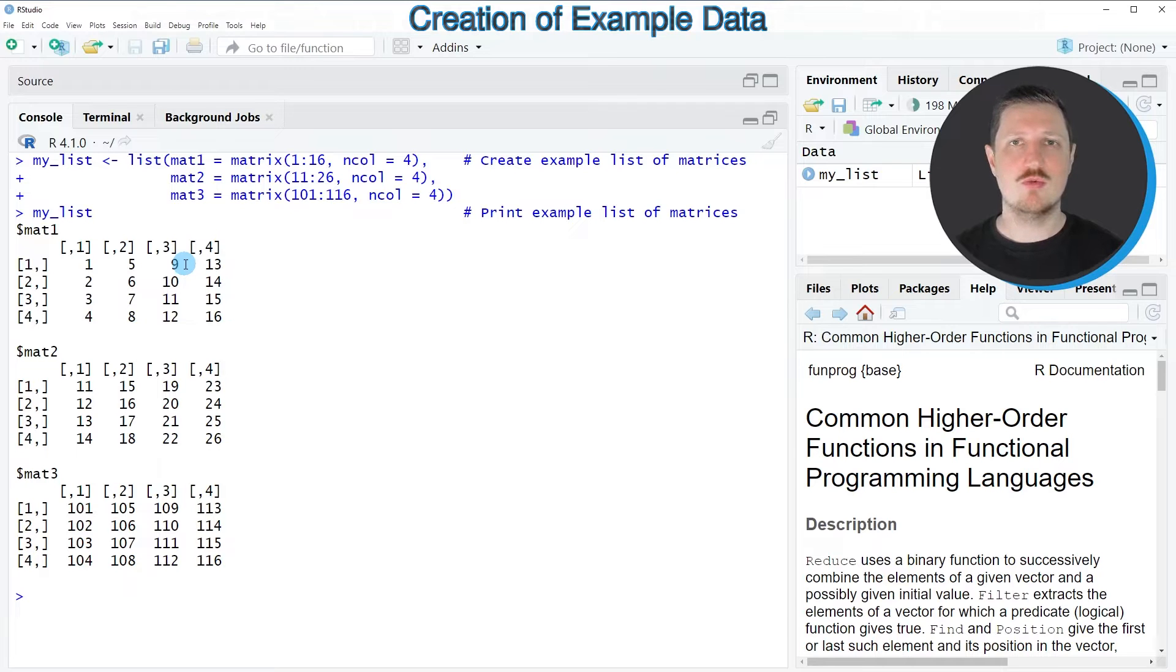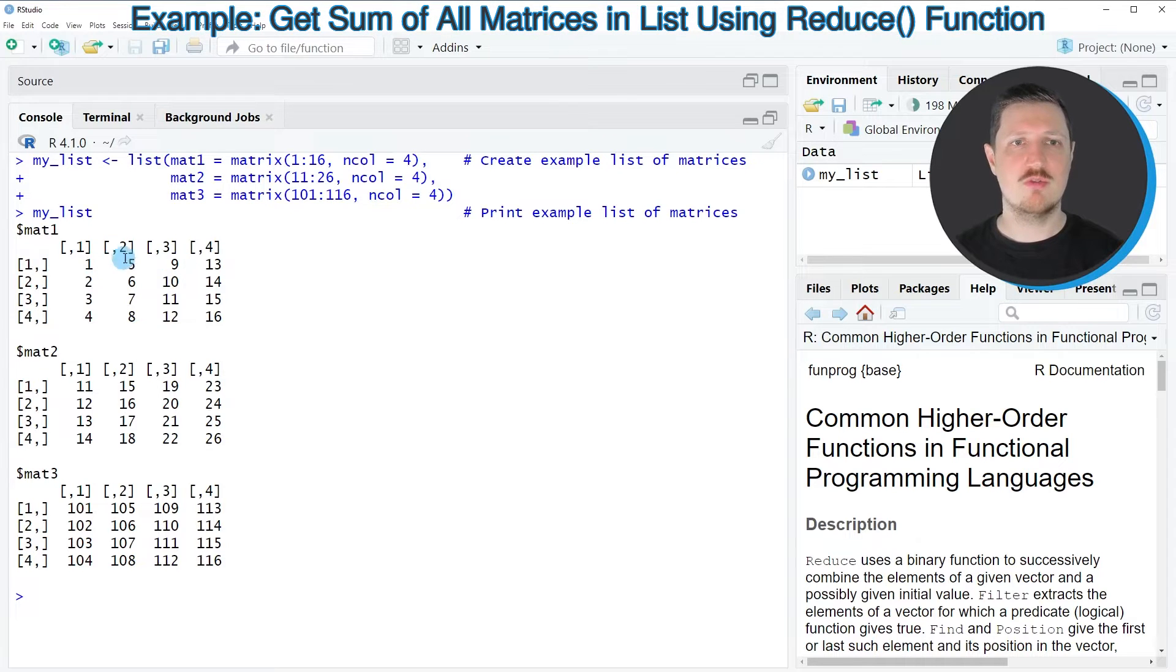Now let's assume that we want to get the sum of these three matrices. For instance, we want to add the values 1, 11, and 101.